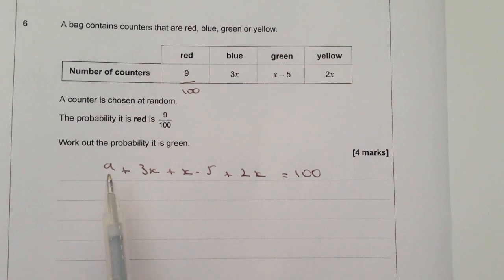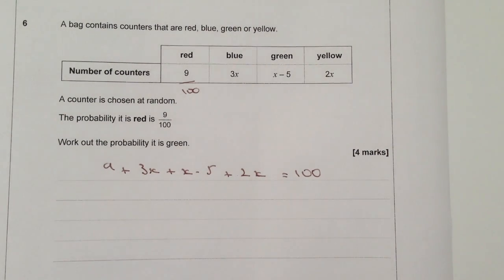So therefore we've got red, blue, green, yellow. Add them all together, we're going to get 100. And then it's just a case of gathering like terms and working out the value of x.